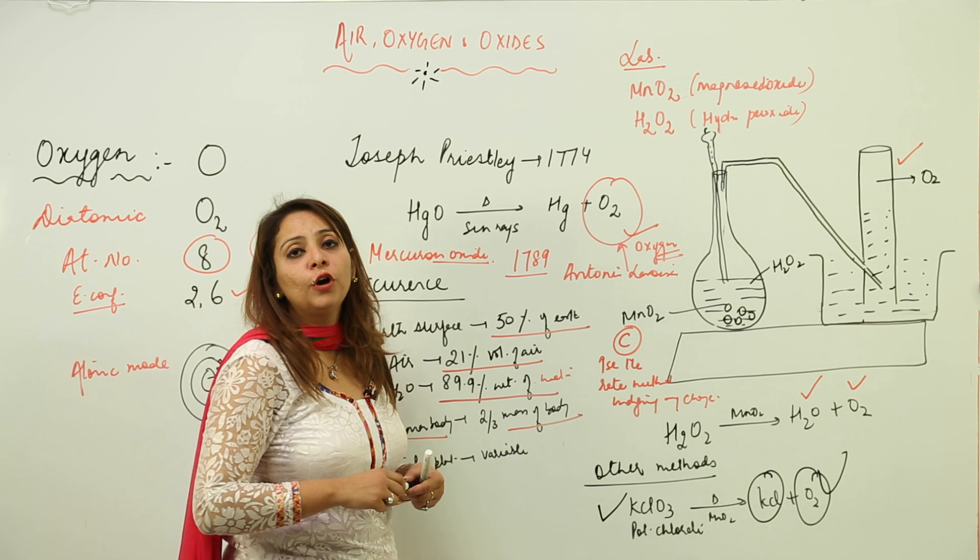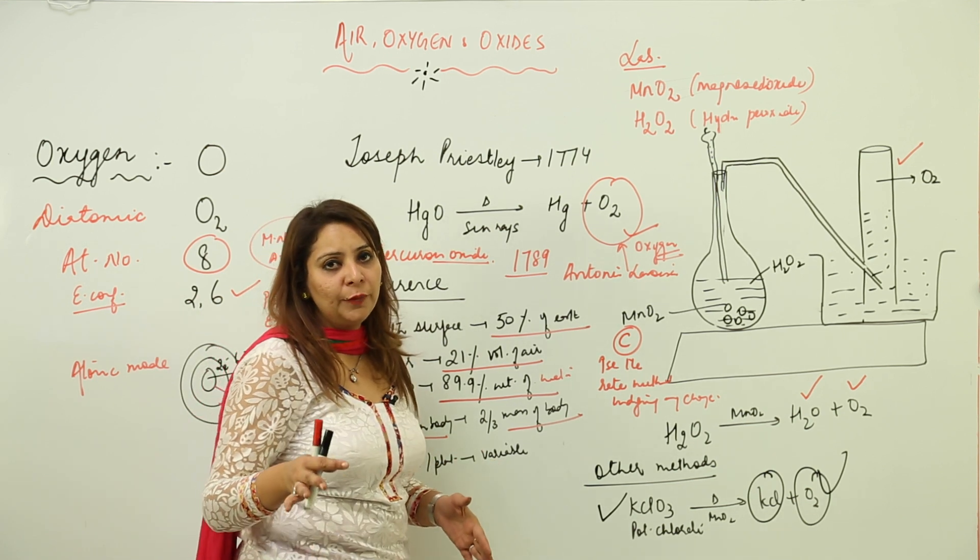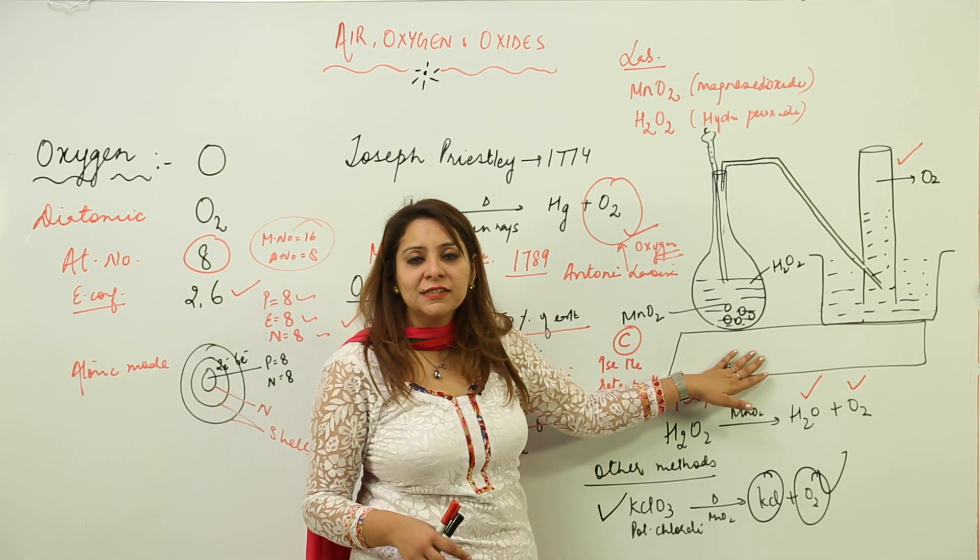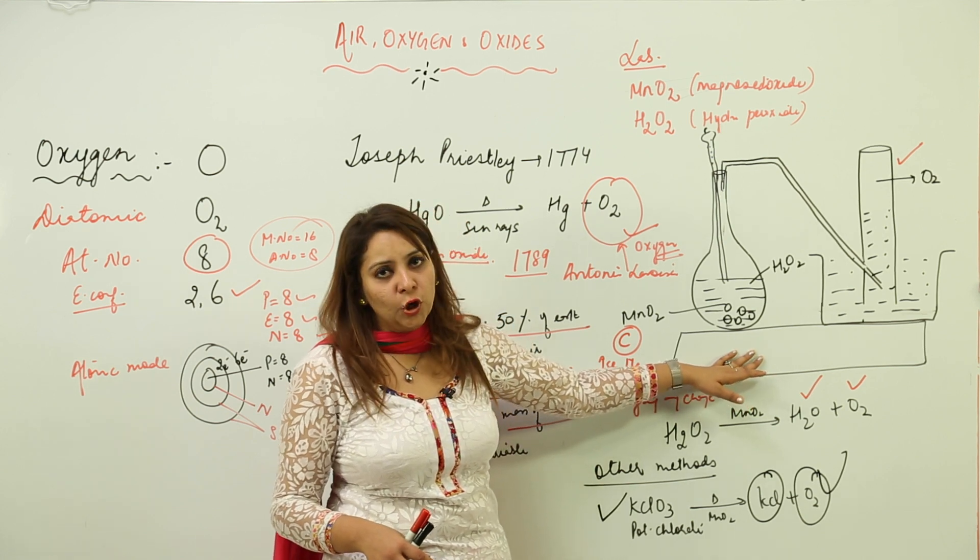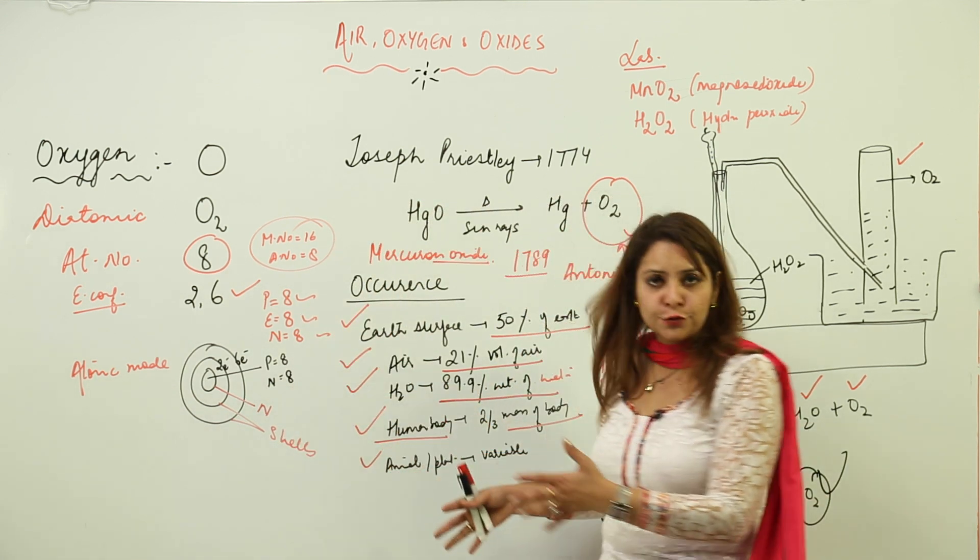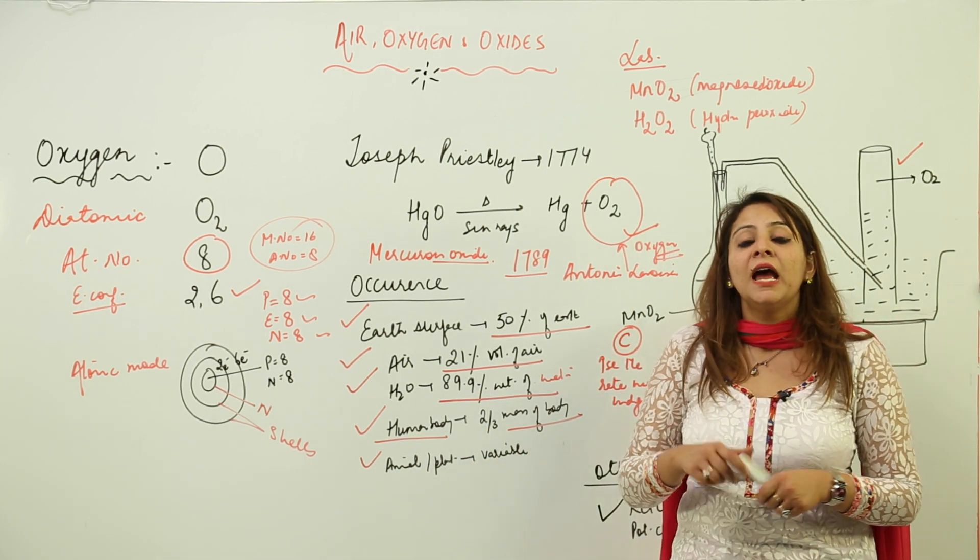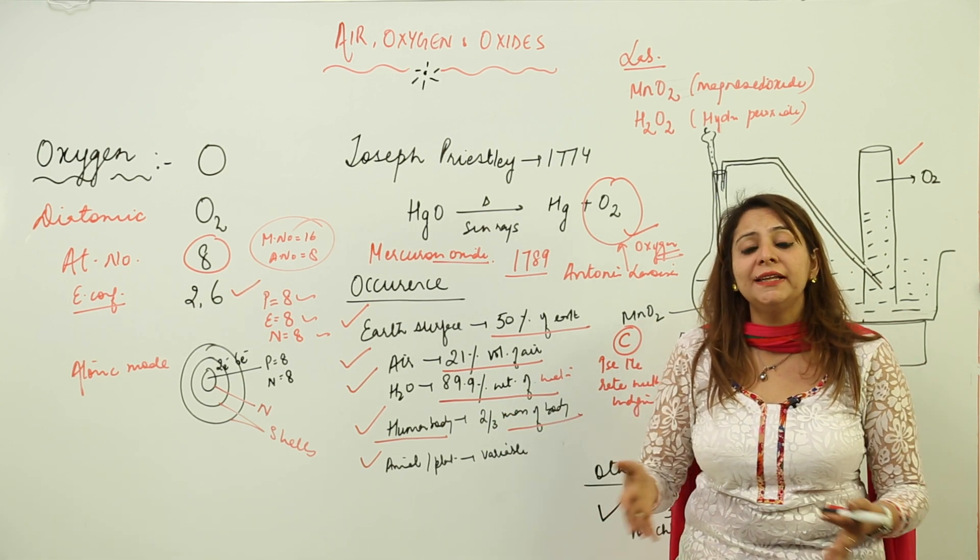So this can also be employed in labs for preparing oxygen, but otherwise, the popular method for preparing oxygen in the lab is by making use of MnO2 as a catalyst and carrying out the decomposition of hydrogen peroxide. So that means this is a basic intro of oxygen. I think you got it. Now we are going to start with the physical properties of oxygen, and then we'll take into consideration the chemical properties because we want to see how it reacts with different substances.